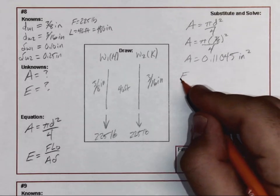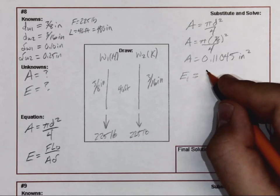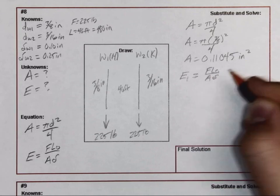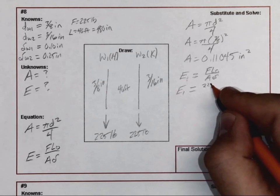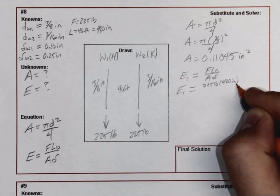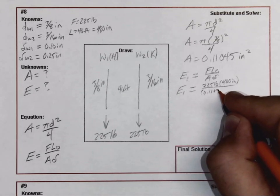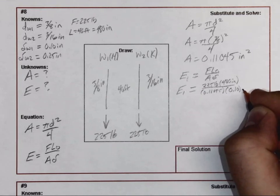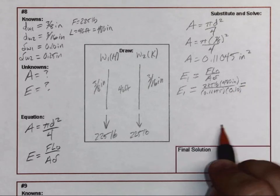And then now I'm going to put E1, modulus of elasticity for the first wire. So force times original length over area times the stretch. Substituting this in, I'm going to have 225 pounds times 480 inches divided by the area that I just solved for, then times the amount of stretch, which was 0.10 inches.